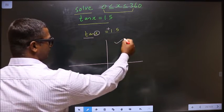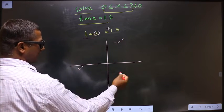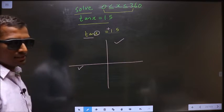Tan is positive in the first and in the third. It is like all silver teacups. So it is positive in the first and the third.